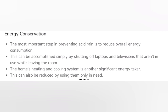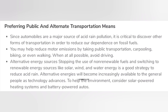Preferring public and alternate transportation means: since automobiles are a major source of acid rain pollution, it is critical to discover other forms of transportation in order to reduce our dependence on fossil fuels. You may help reduce motor emissions by taking public transportation, carpooling, biking, or even walking. When at all possible, avoid driving.